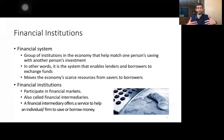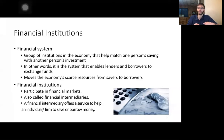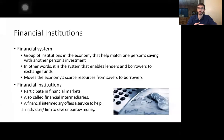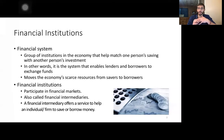A financial intermediary connects borrowers and savers. The borrower is trying to acquire funds and is willing to pay a little more in the future to borrow money now. The saver has enough money for current expenditures and is saving for the future. Since inflation decreases the purchasing power of money, savers put funds in savings accounts or loan them to others in exchange for a return, offsetting that loss in purchasing power.